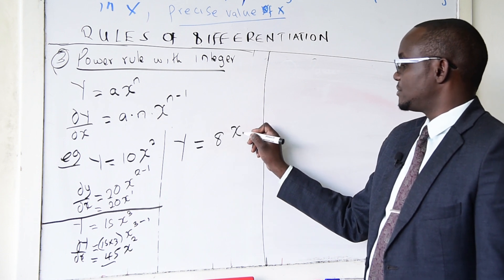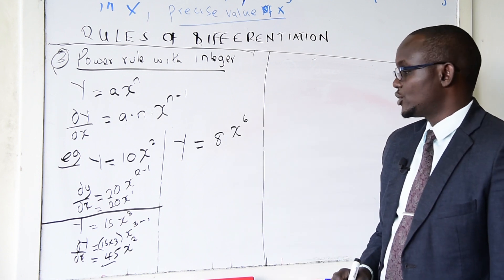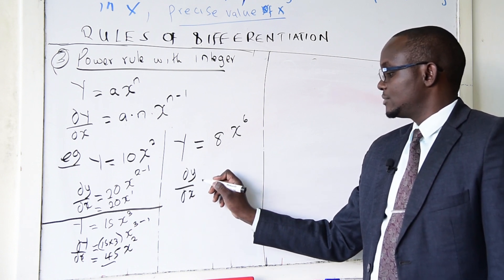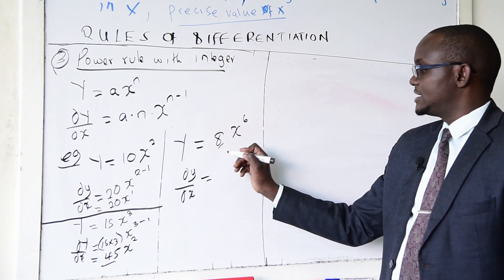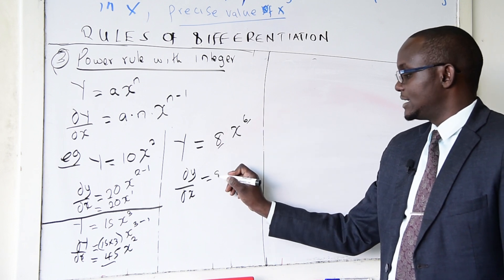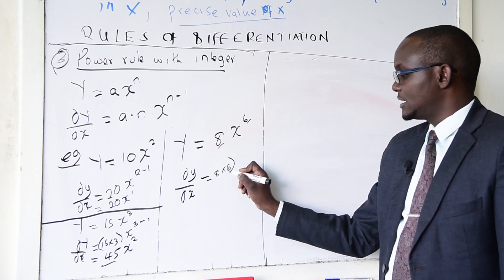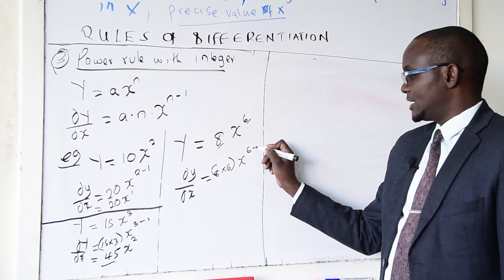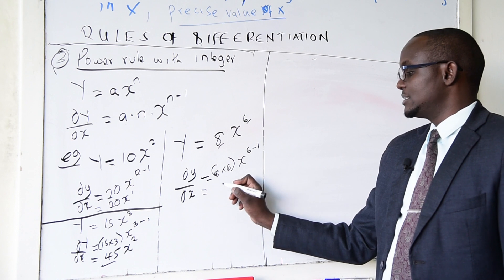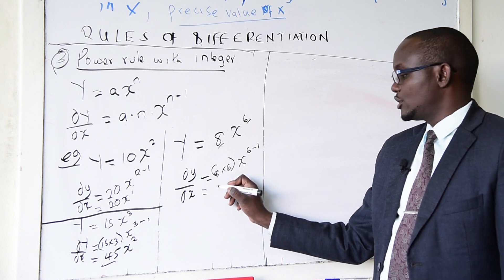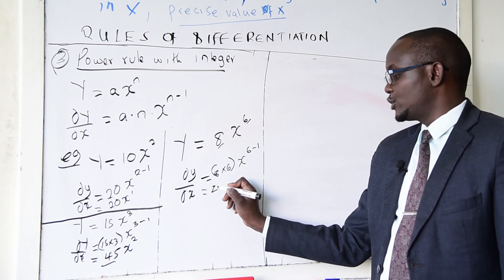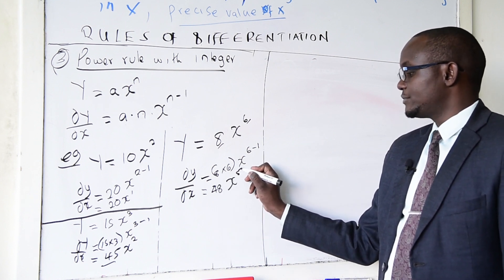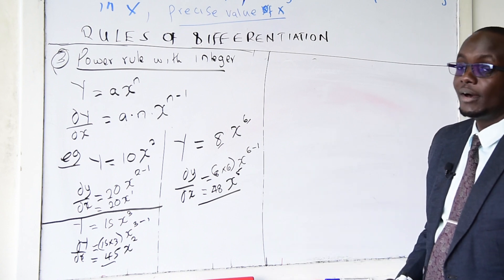Last example: y equals 8x^6; find dy/dx. Take the integer 8 and multiply by the power 6: 8 times 6 equals 48. The new power is 6 minus 1, so the answer becomes 48x^5.